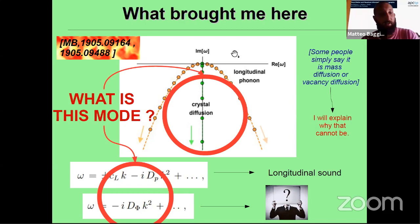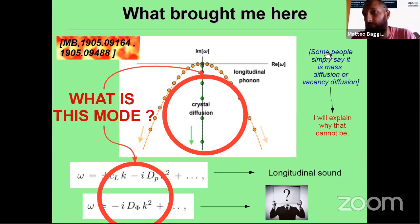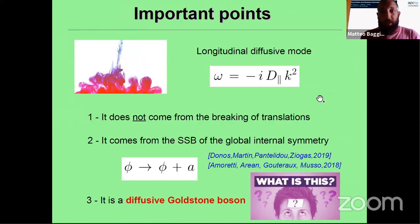This extra diffusive mode is what made me start thinking about quasicrystals. Some people in hydrodynamics say this is simply mass diffusion or vacancy diffusion appearing in solids. But that cannot be the case in the holographic model, because mass diffusion and vacancy diffusion are hydrodynamic modes corresponding to some conserved quantity — for example, mass diffusion is the diffusive mode related to conservation of mass. In the holographic model we have absolutely no conserved quantity apart from energy and momentum, so this explanation cannot work.